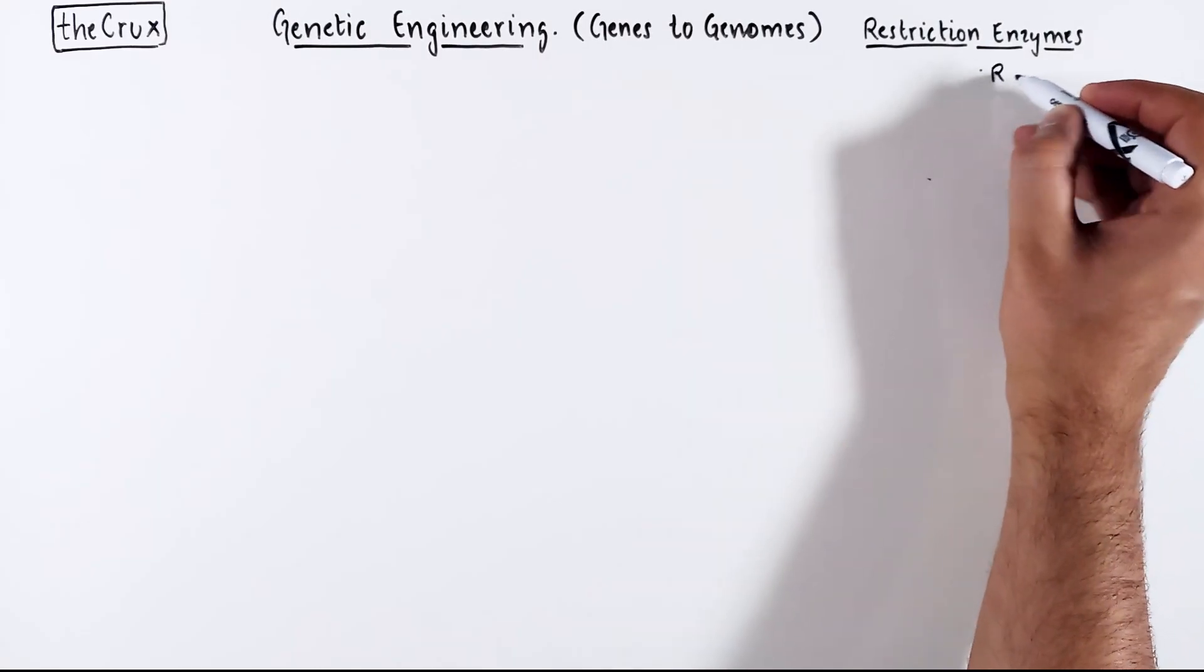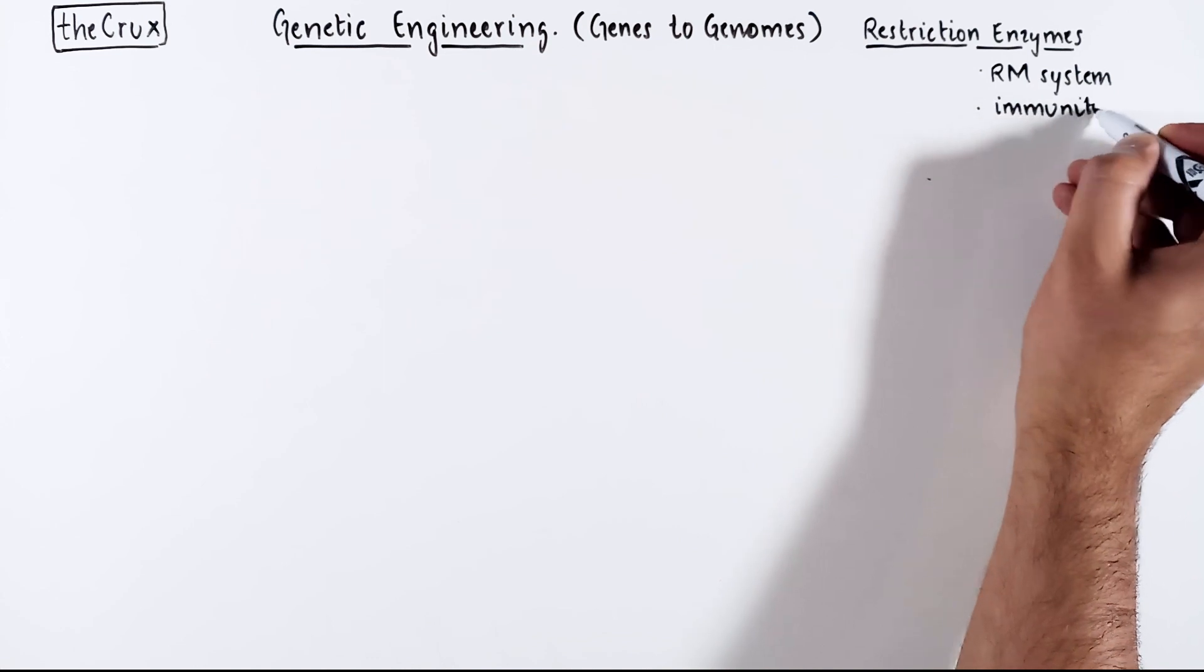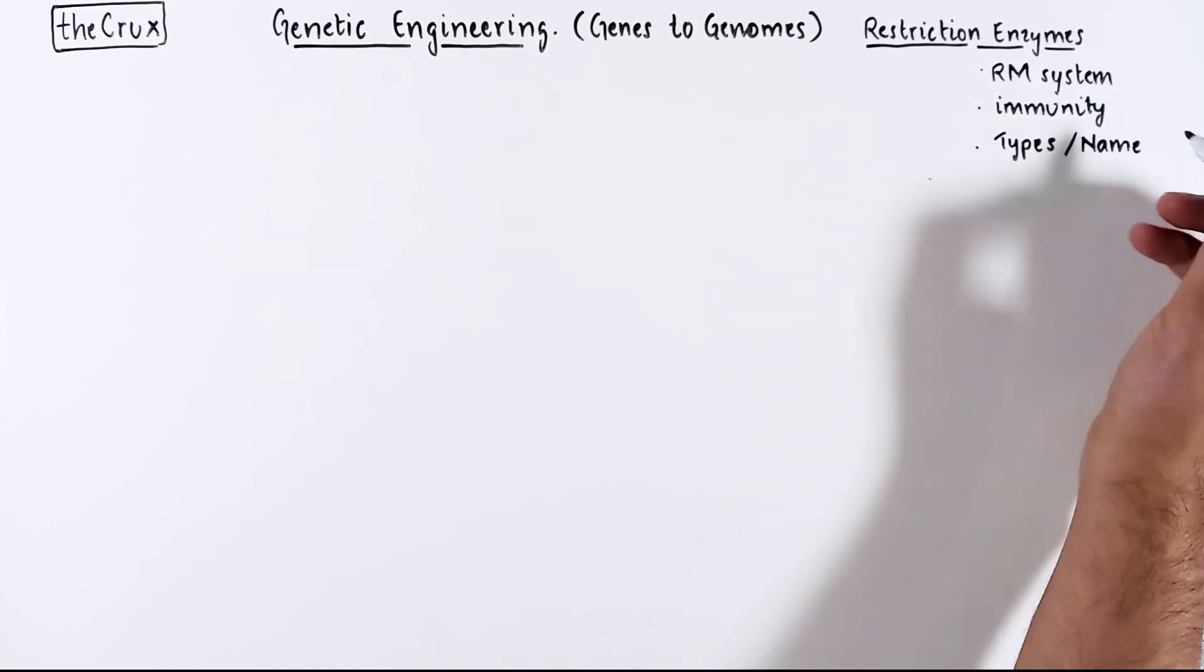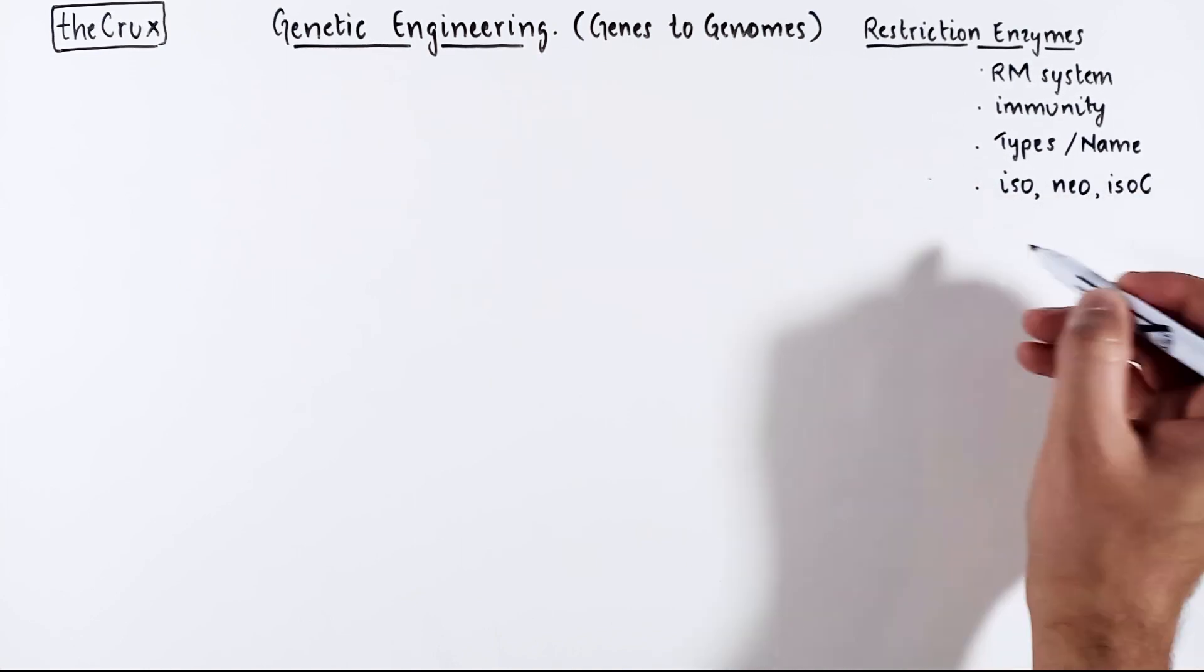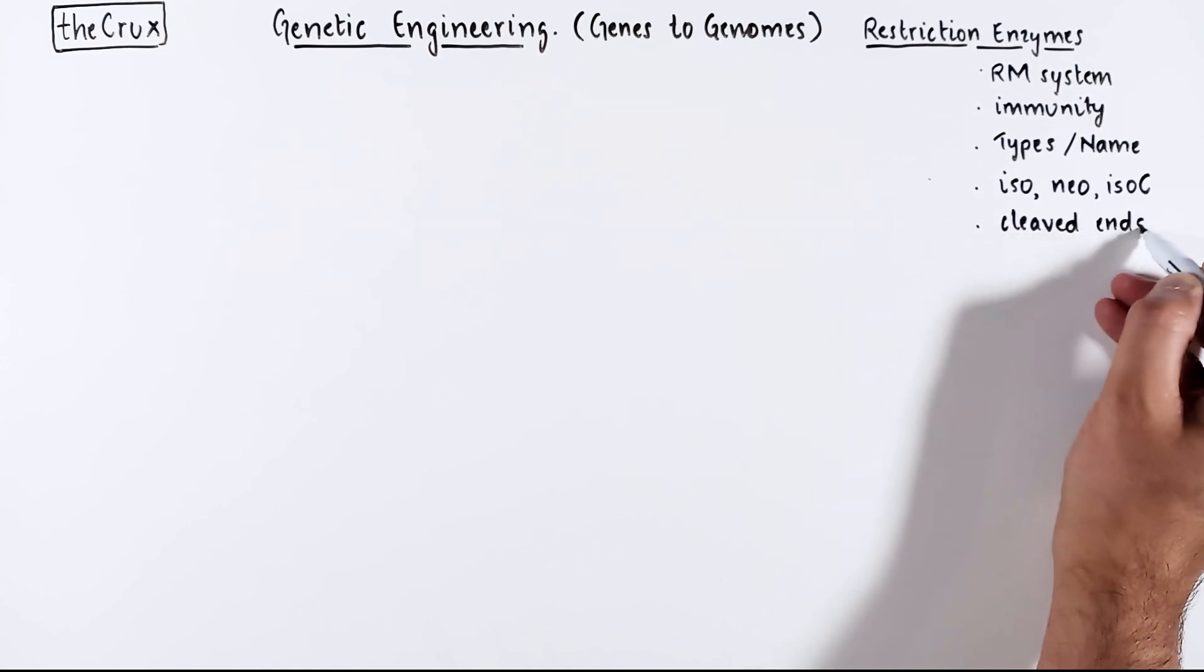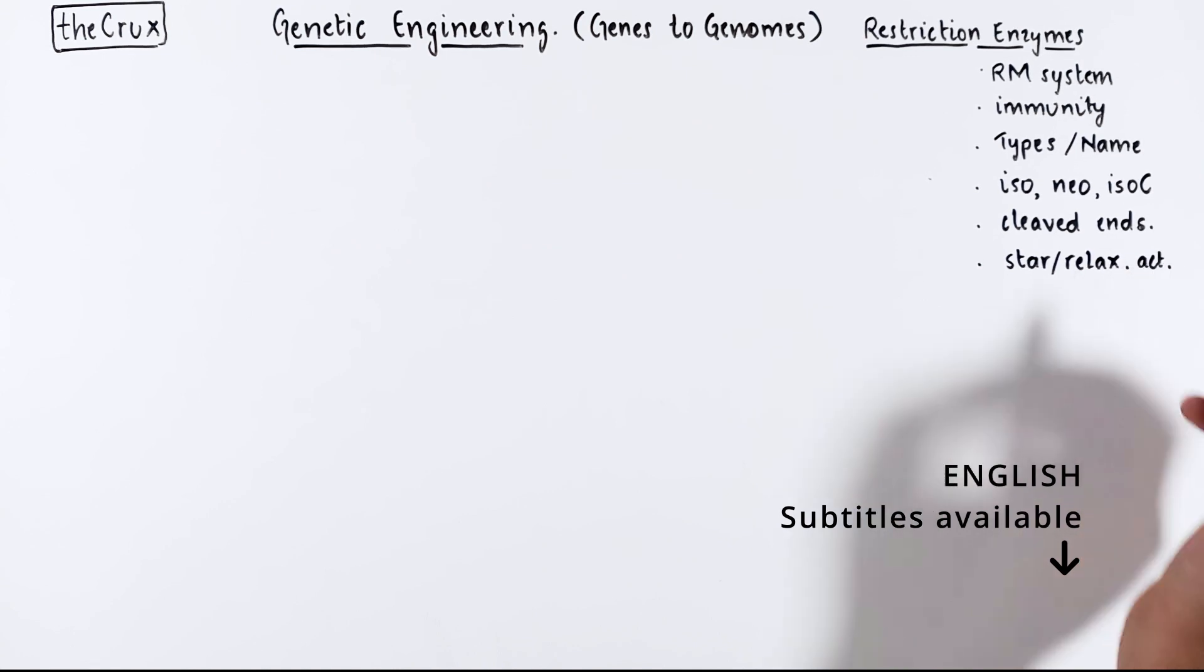In this video we will go from the RM system in bacterial immunity to molecular biology, where we will compare different types of restriction enzymes, their function, nomenclature, and also categorize the enzymes from a practical standpoint, the types of cuts they make, and how restriction enzymes can sometimes display relaxed specificity.